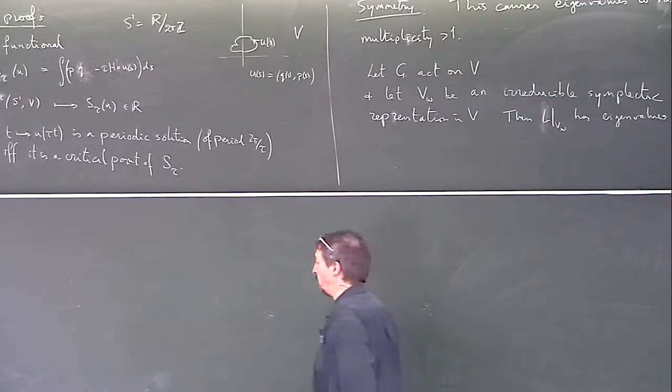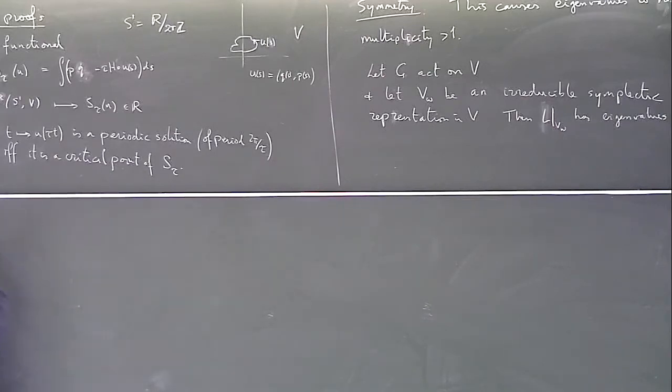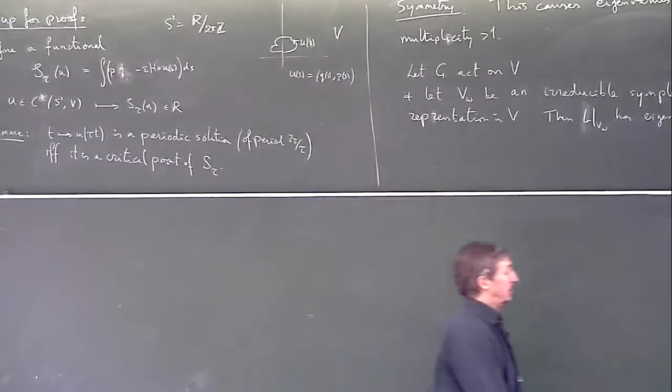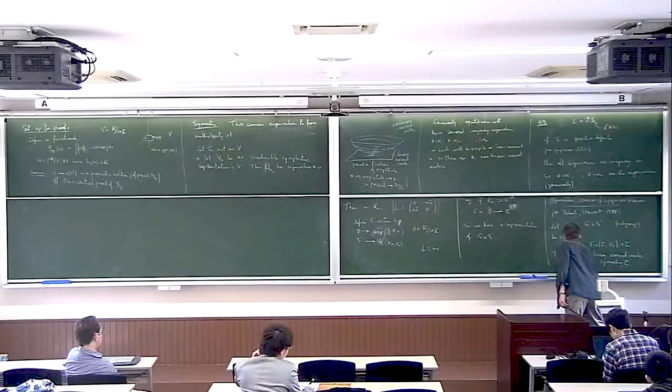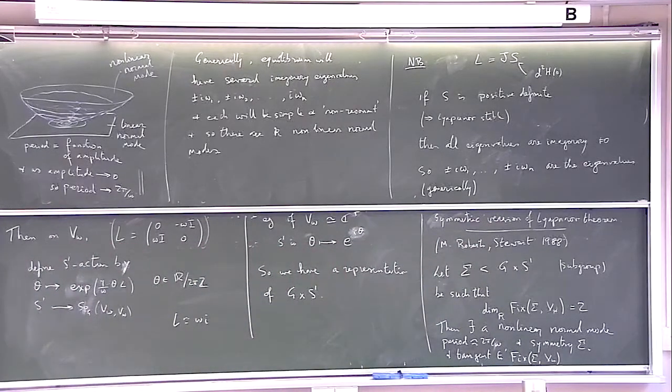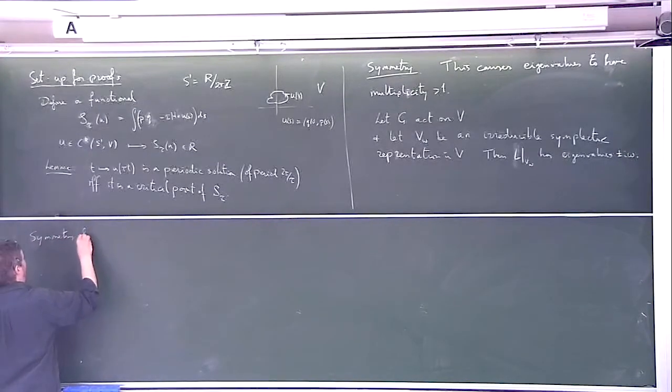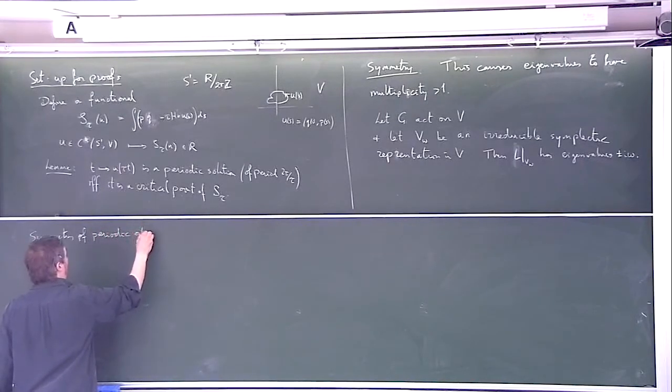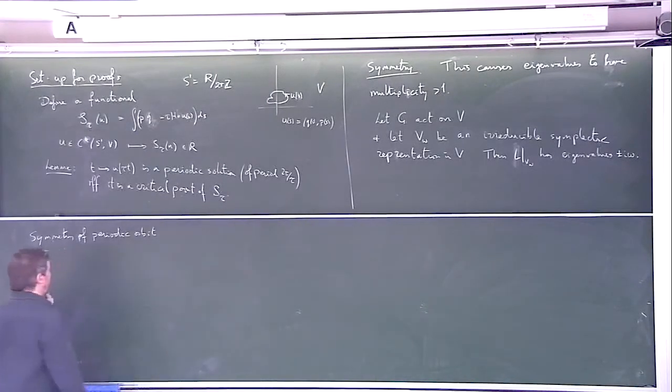So what do we mean by symmetry sigma? So the nonlinear normal mode is just this picture. Oh, it's tangent. So the normal mode was tangent to Lyapunov's mode. Now it's tangent to this fixed point space. As I said, I'm going to do an example in a minute. But let me just say what... what do we mean by symmetry of a periodic orbit? Maybe actually example now would be better, and then the symmetry is clear from the example instead of writing down formal definitions.